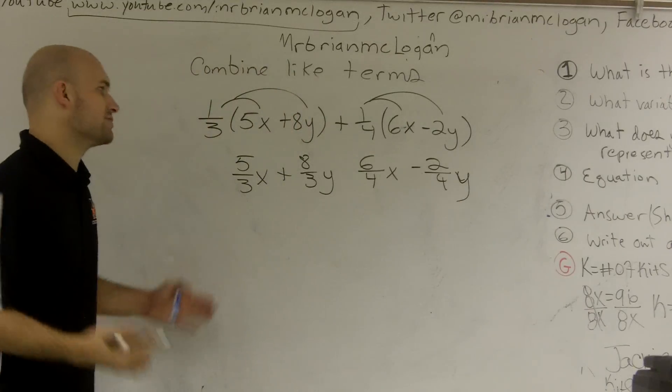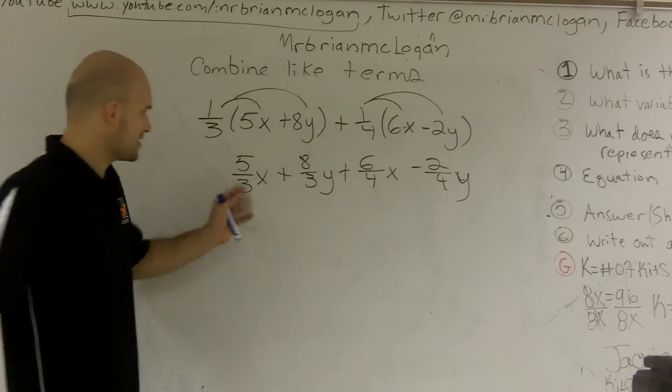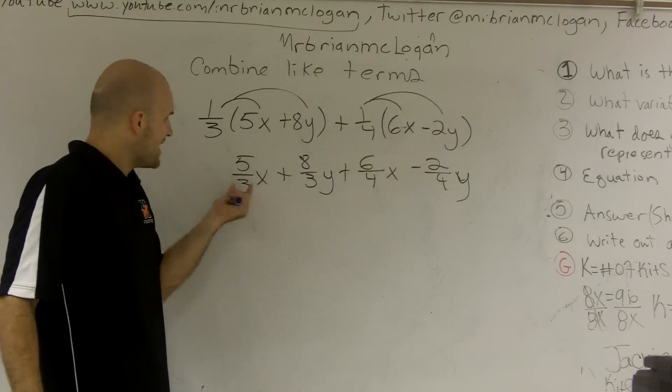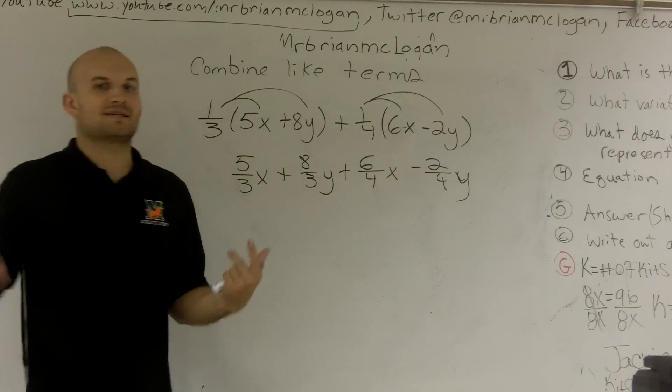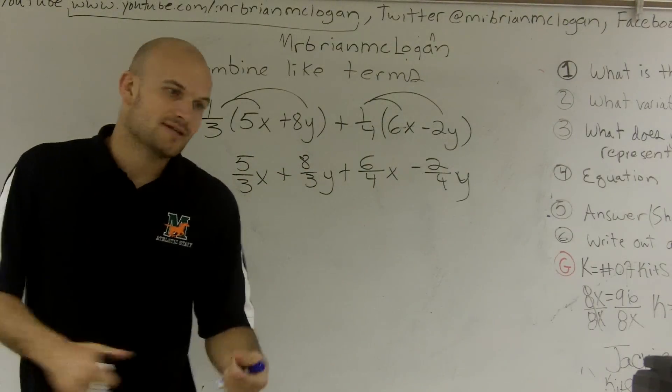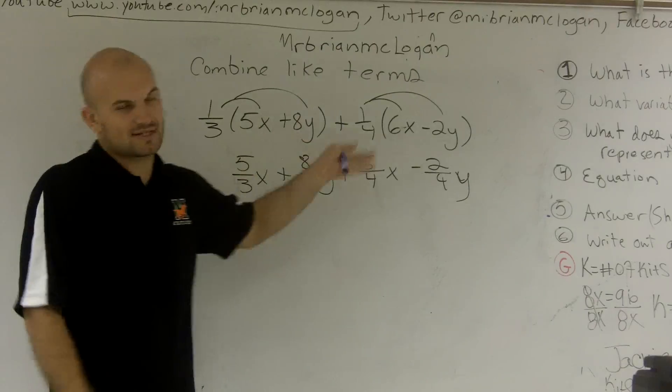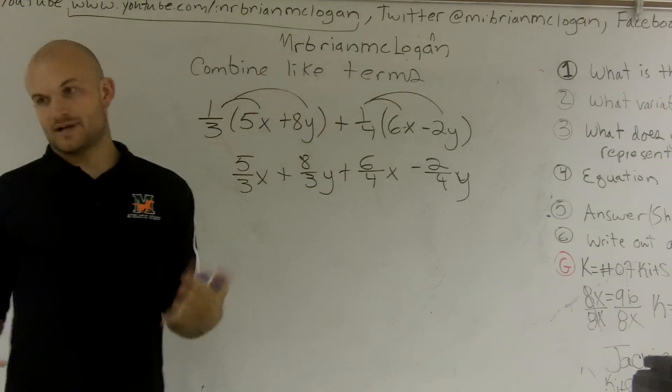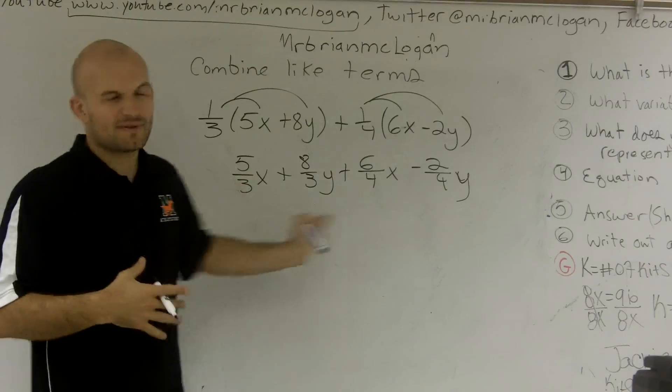Now I could easily do this, combine like terms. The only difference is when I'm combining 5/3x and 6/4x, I have to get the same denominator. So I have to multiply by my lowest common denominator, figure it out, and do it, which is perfectly fine.